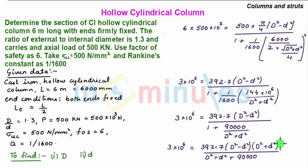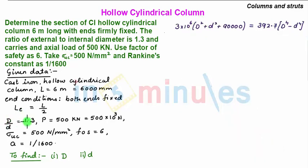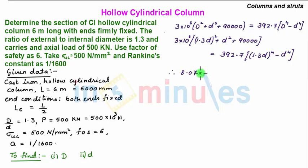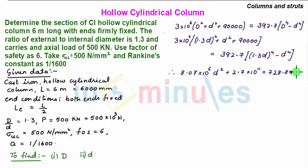This result comes from the product (D² - d²)(D² + d²), considered as a minus b into a plus b. Now substituting D equal to 1.3 times small d, we get 3 into 10 to the power 6 into 1.3 small d square plus small d square plus 90000 is equal to 392.7 into 1.3 small d to the power 4 minus small d to the power 4. Upon simplification, we get 8.07 into 10 to the power 6 small d square plus 2.7 into 10 to the power 11 is equal to 728.89 into small d to the power 4.